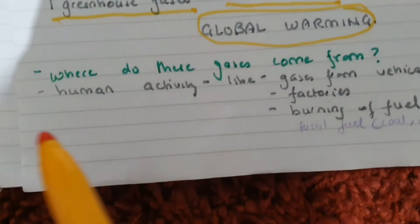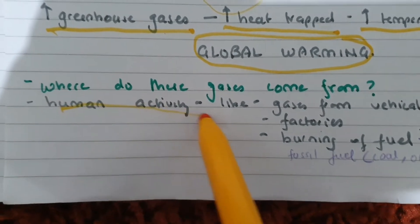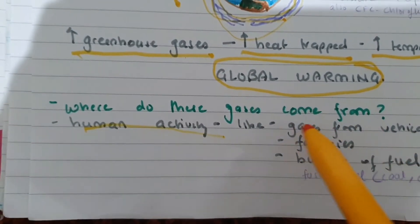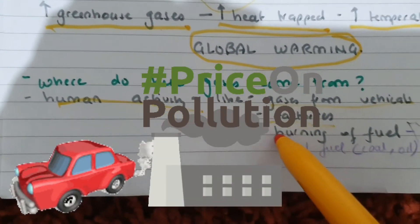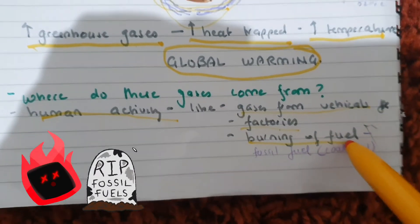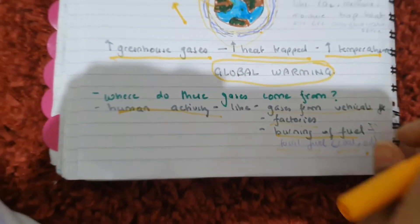Where do these gases come from? So these gases basically come more and more from human activity — like gases from vehicles, from factories, burning of fuels, especially fossil fuels like coal and oil. So that is where these gases come from.